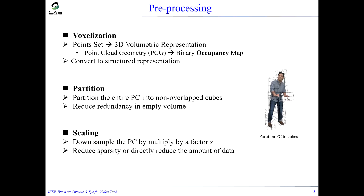Next, I will introduce the details of each module. In pre-processing, voxelization converts point cloud geometry to a binary occupancy map, which is a structured representation suitable for 3D convolution processing. Then, we partition the entire point cloud into non-overlapping cubes, reducing redundancy in empty volumes and allowing cube-by-cube processing to reduce memory and runtime costs. We also propose scaling to down-sample the point cloud by 1 to 8 with a scaling factor, which can reduce sparsity or directly reduce the amount of data to achieve better compression.